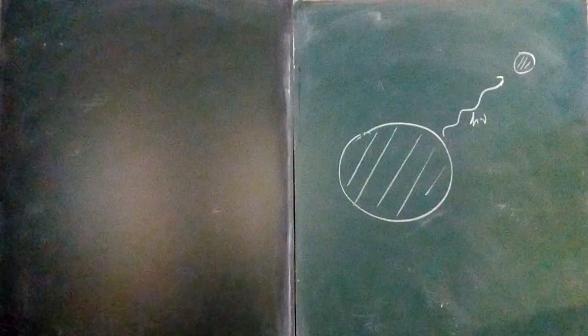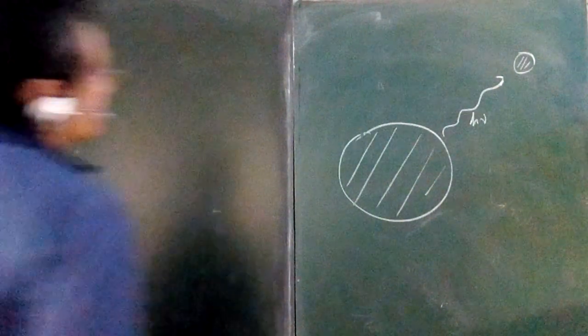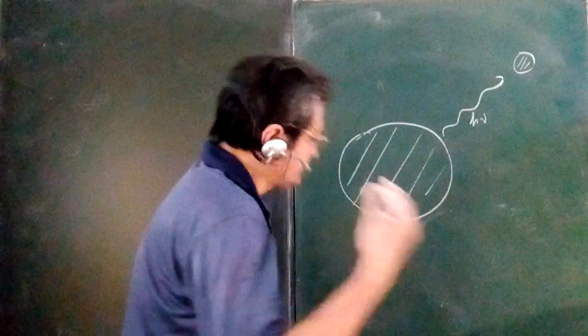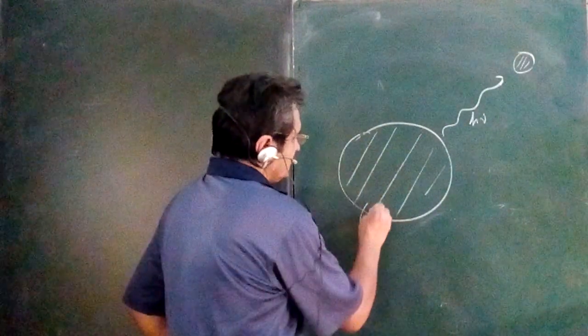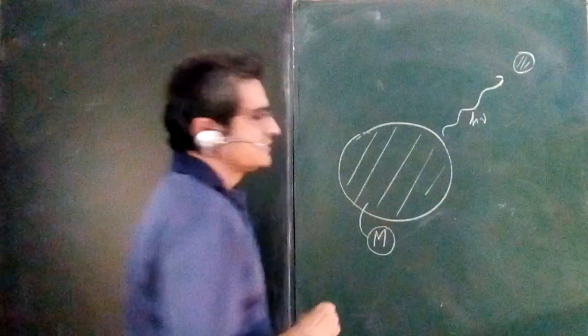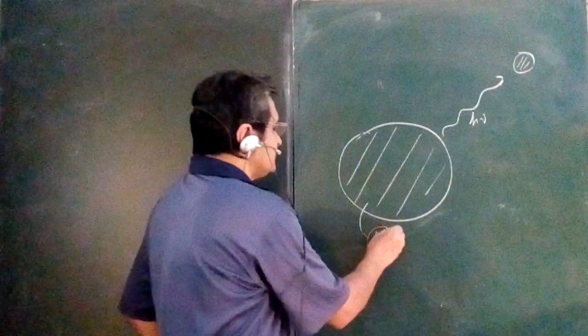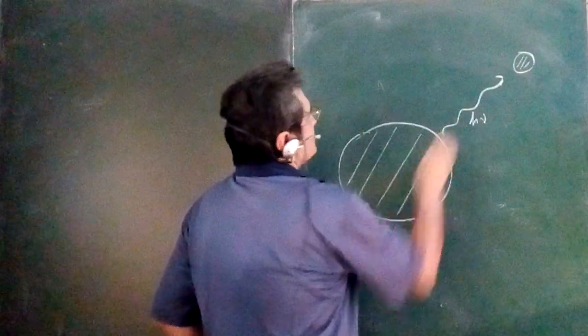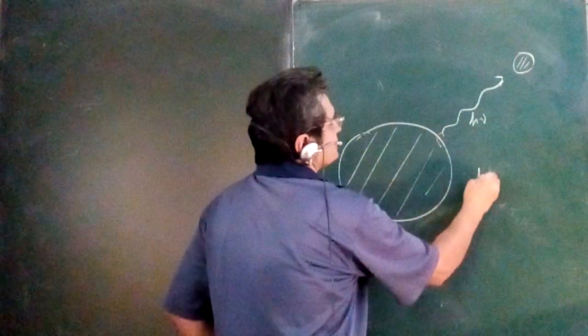In this lecture we will derive the expression for gravitational rate shift. Let us first consider that this be a body with mass M, it's a star or whatever with huge mass M and let it emit a photon with energy h nu.